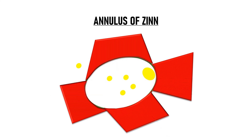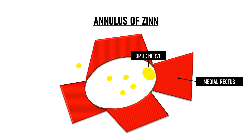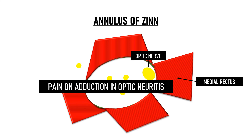The optic nerve, entering through the optic canal, lies very close to the medial portion of the annulus of Zinn. Many patients with optic neuritis complain of pain during extraocular movements, especially during adduction, because inflammation of the optic nerve sheath can spread to involve the sheath of the medial rectus muscle, given how closely they lie to each other.